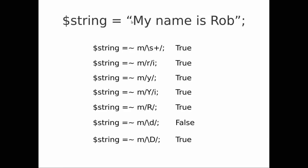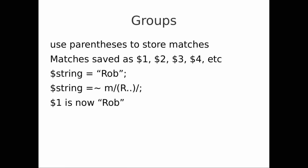Let's look at grouping. We can use parentheses to store our matches — the matches are saved as $1, $2, $3, $4, and so on. These are special variables that Perl has built in. So if we have the string 'Rob' and we say does it match a capital R followed by two other characters, with those characters surrounded in parentheses, Perl remembers what matched and puts it in $1. So $1 becomes 'Rob' — the whole string.